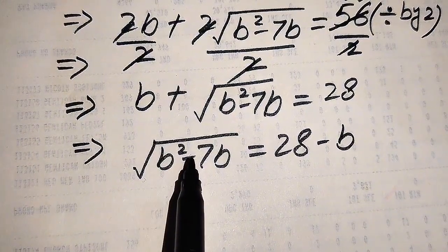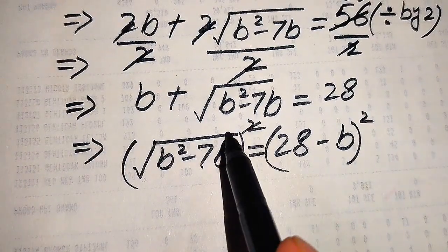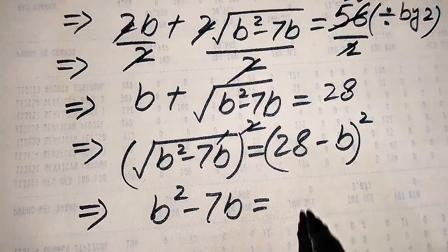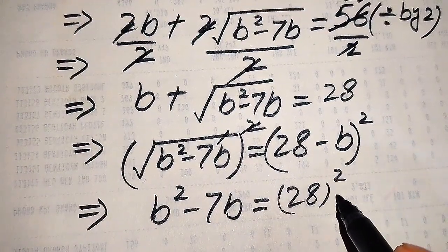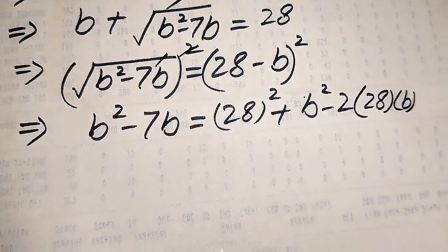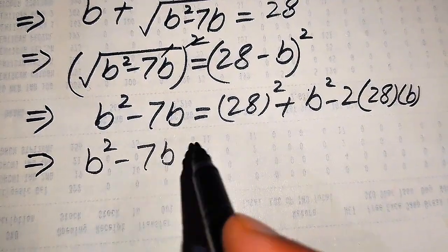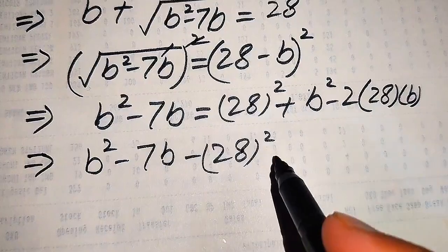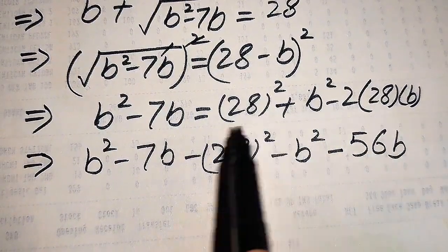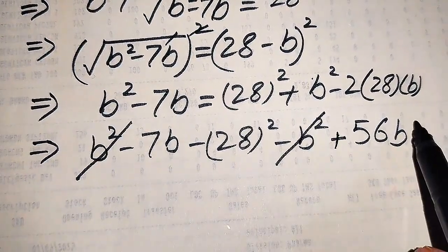To remove the square root sign we square both sides again. The square root cancels and we get b²−7b on the left. On the right we apply the formula (a−b)² = a²−2ab+b², giving us: 28² − 2·28·b + b². We move all terms from the right hand side to the left hand side: b²−7b − 28² − b² + 56b = 0.